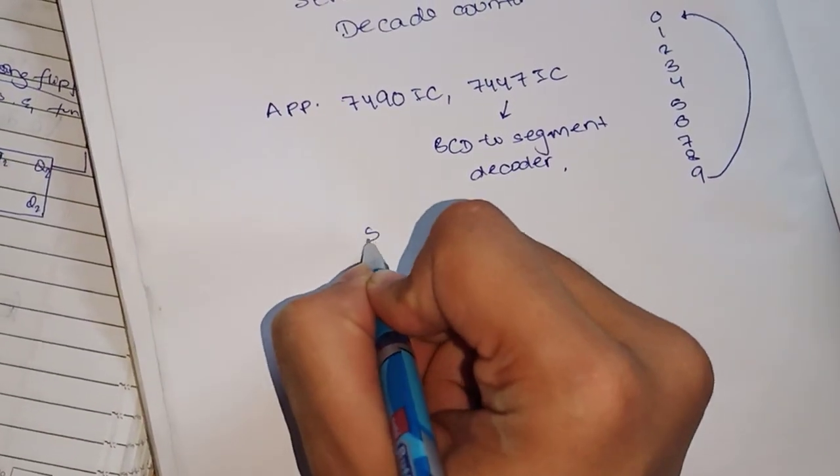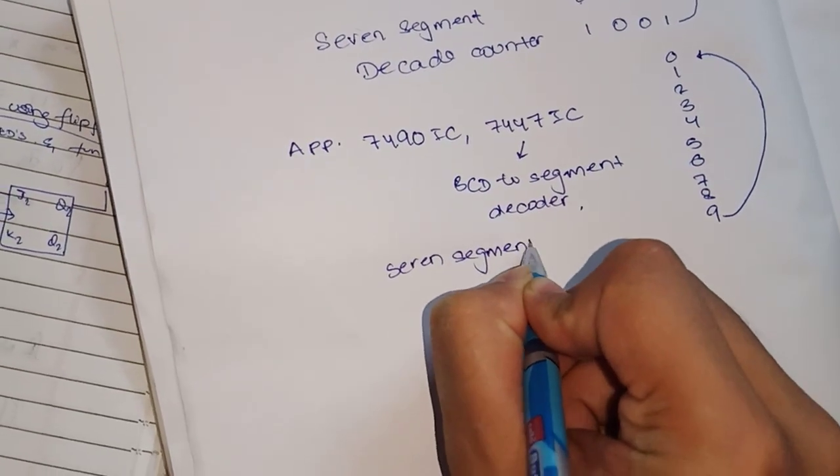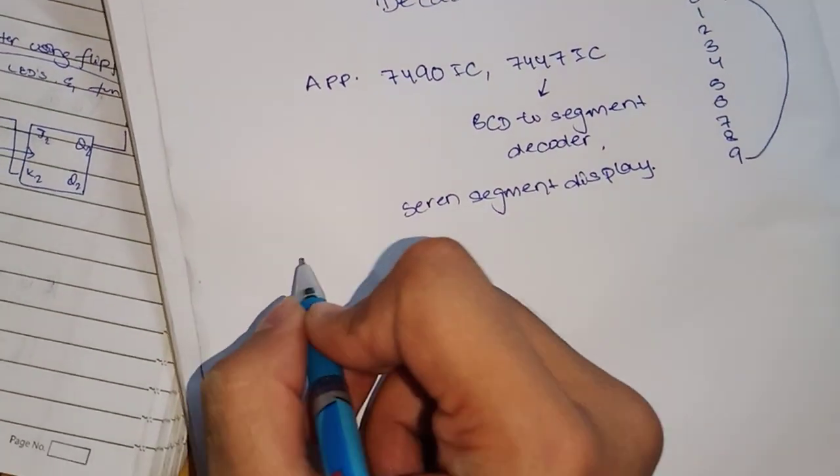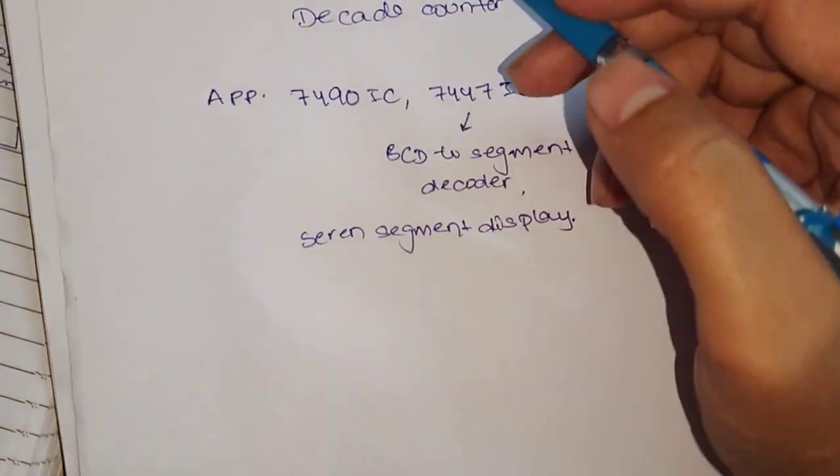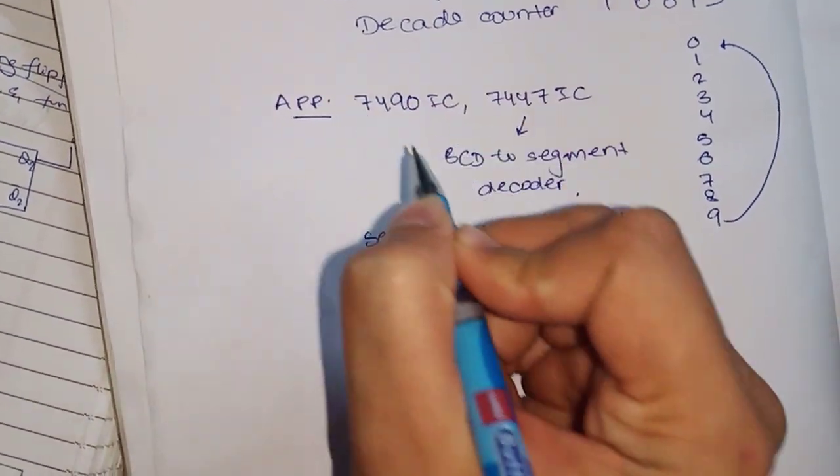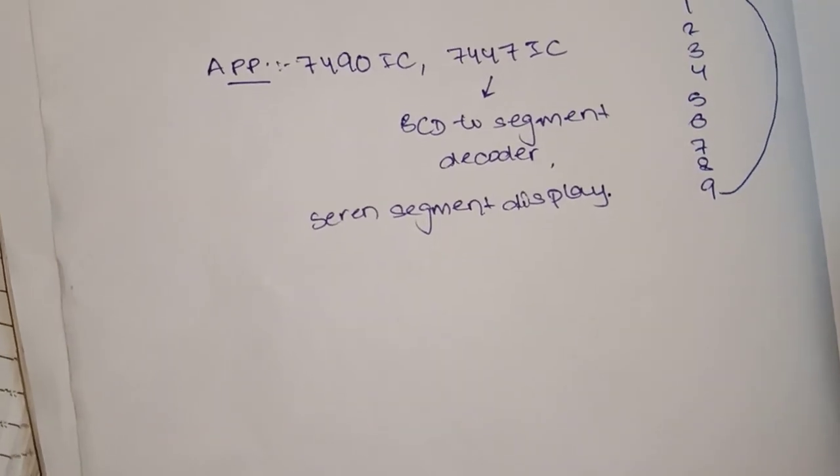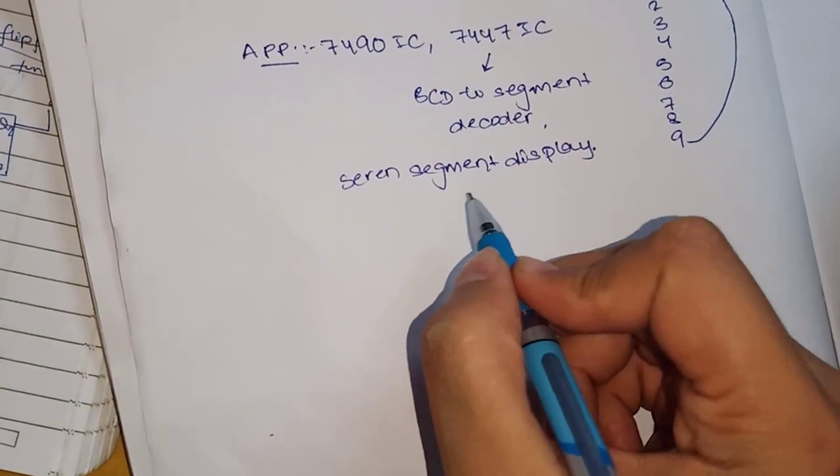You'll also need a 7-segment display. In the practical exam they will ask you to write the aim, then apparatus required, and then what is the circuit diagram.